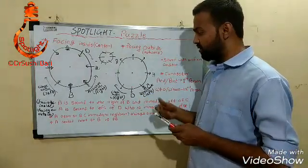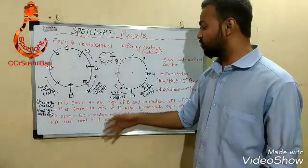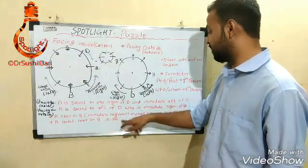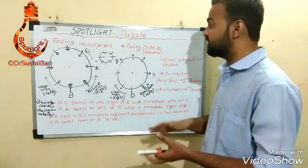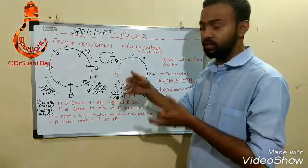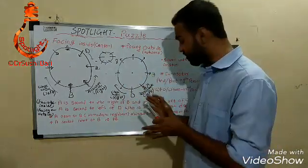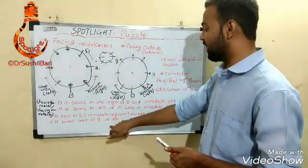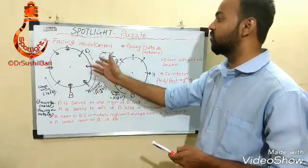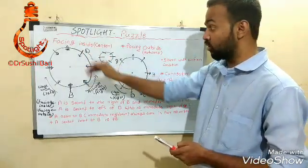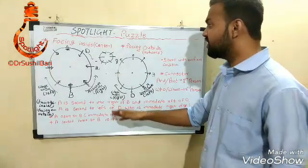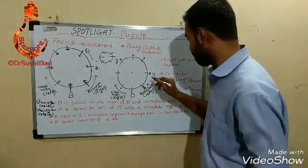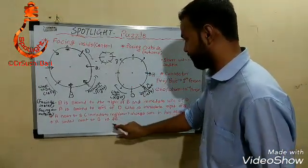Some statements in the question say things like 'A is near to B' or 'A sitting next to B,' which means A and B are immediate neighbors. They always come in a pair: A-B or B-A. Which order depends on the direction — clockwise or anti-clockwise — based on whether persons are facing inside or outside.